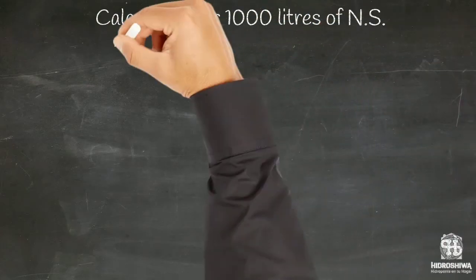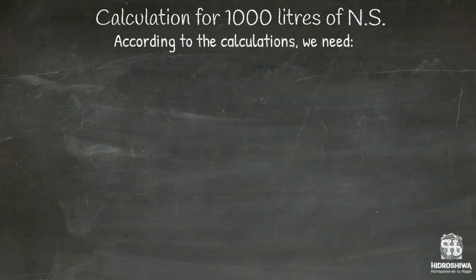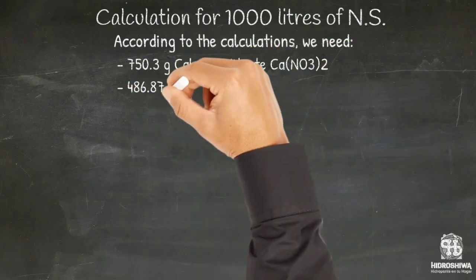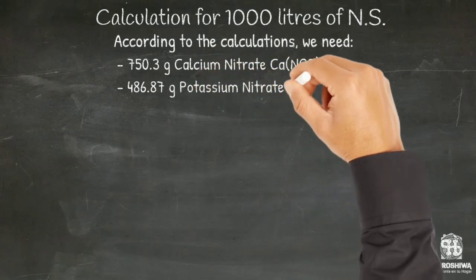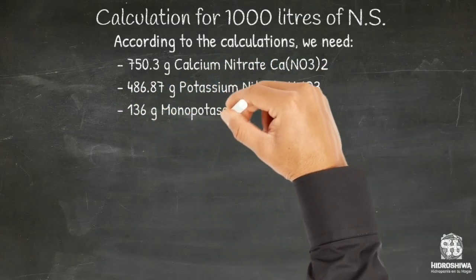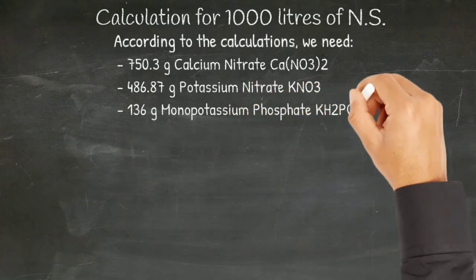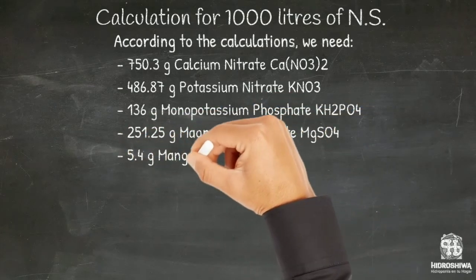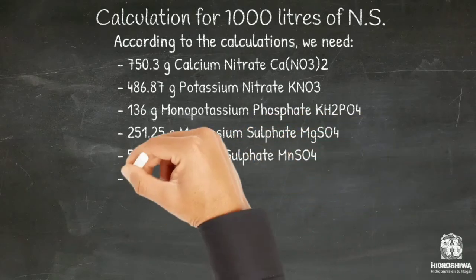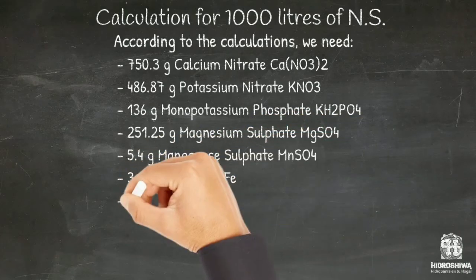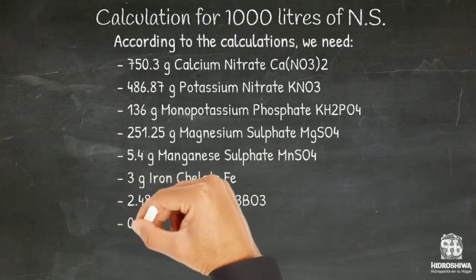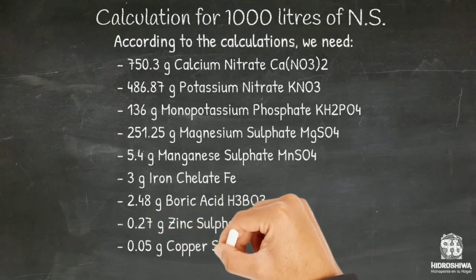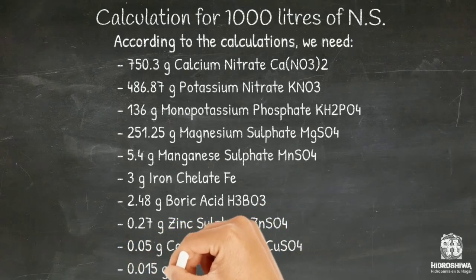The quantities of nutrients required according to our calculations are: 251.25 grams of magnesium sulfate, 5.4 grams of manganese sulfate, 3 grams of iron chelate, 2.48 grams of boric acid, 0.27 grams of zinc sulfate, 0.05 grams of copper sulfate, and 0.015 grams of sodium molybdate.